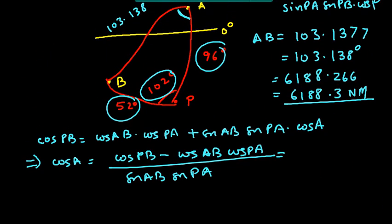So all I have to do now is just enter the values. So let us start with cos of PB cos 52 minus bracket start cos of AB 103.138 into cos of PA which is 96 bracket close, divided by bracket start sin of AB 103.138 into sin of PA sin 96 bracket close. So I get this value 0.661 and then cos inverse. Directly I get this value A is equal to 52.326. I can round off to 52.3 degrees.